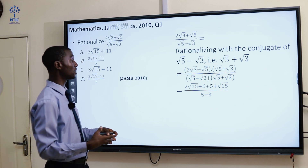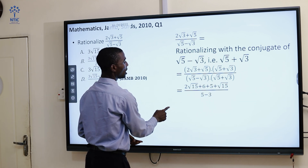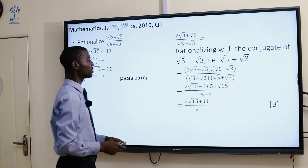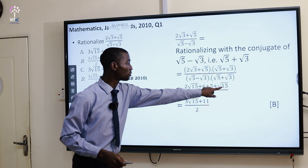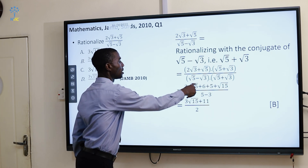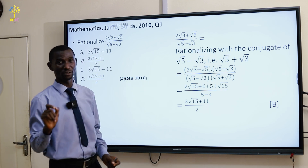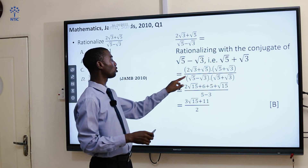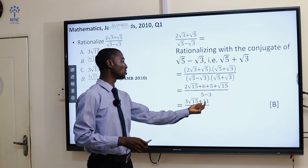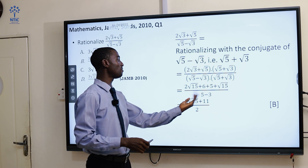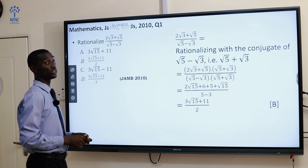By the time you collect the like terms, we have 2√15 plus √15, then 6 plus 5. What is 2√15 plus √15? √15 means 1√15, so 2√15 plus 1√15 gives 3√15. Then 6 plus 5 gives 11, all over 5 minus 3, which is 2. The answer is option B.